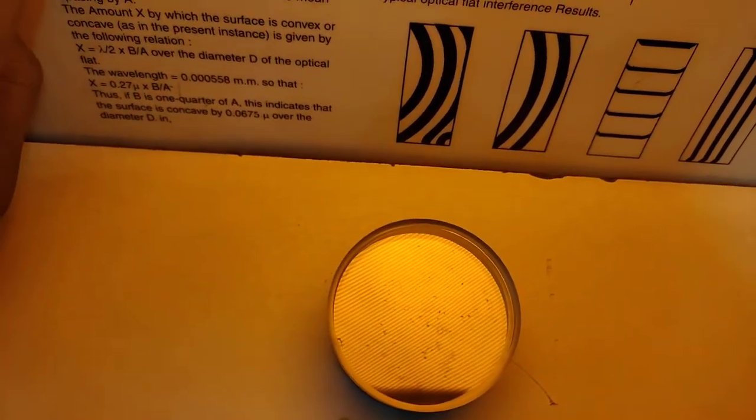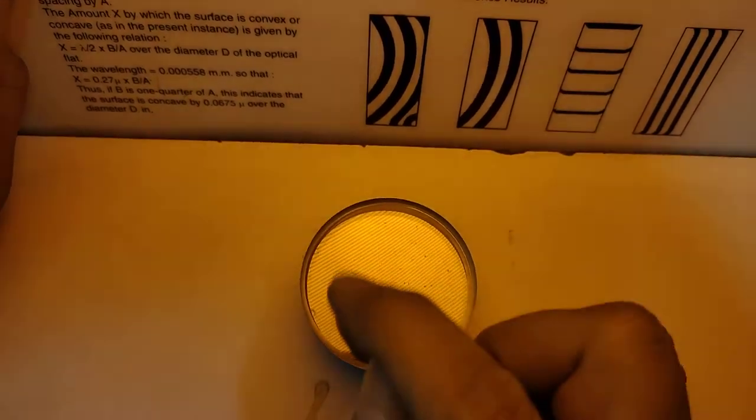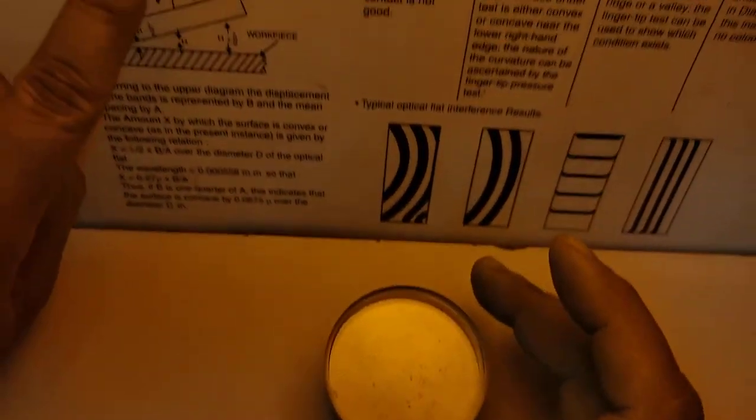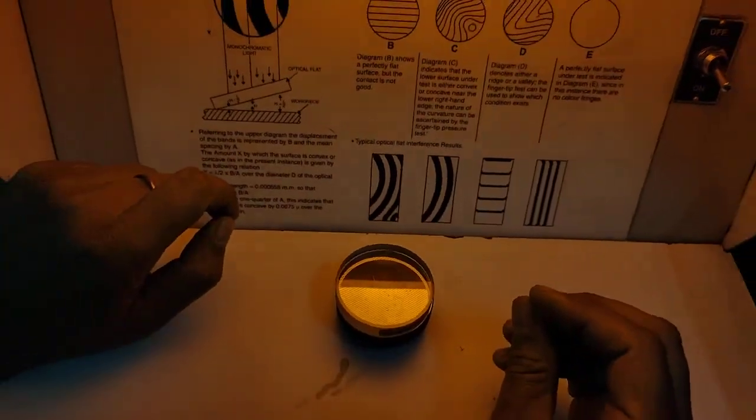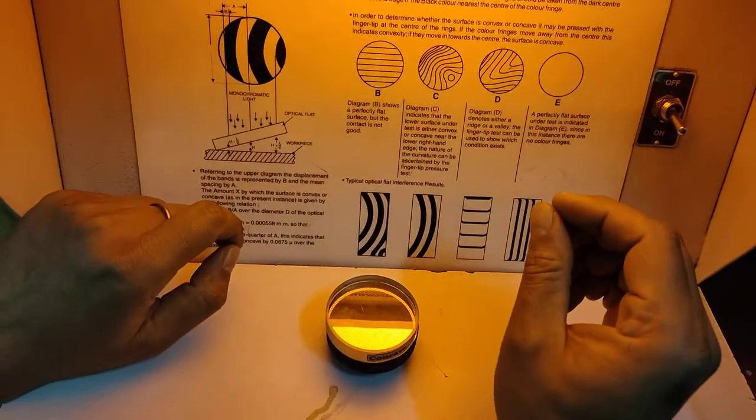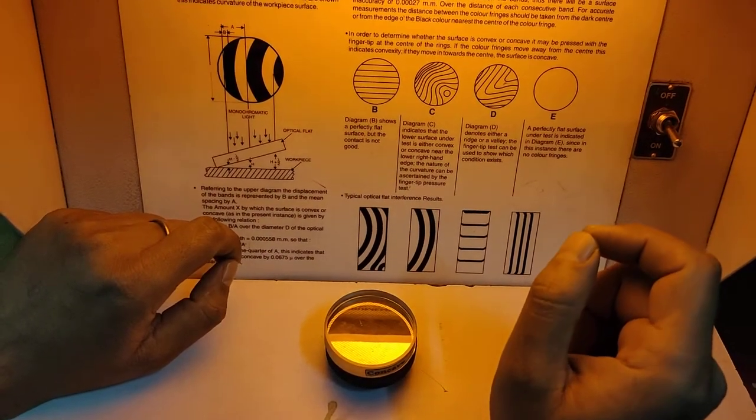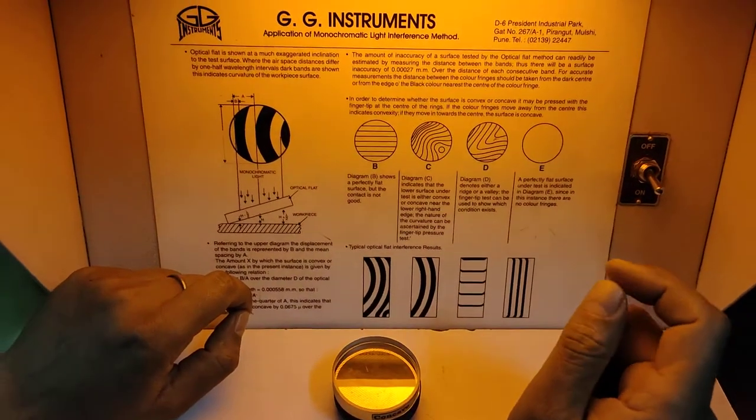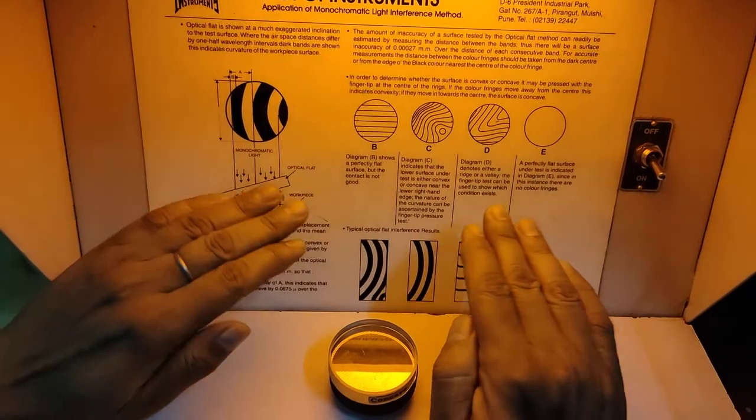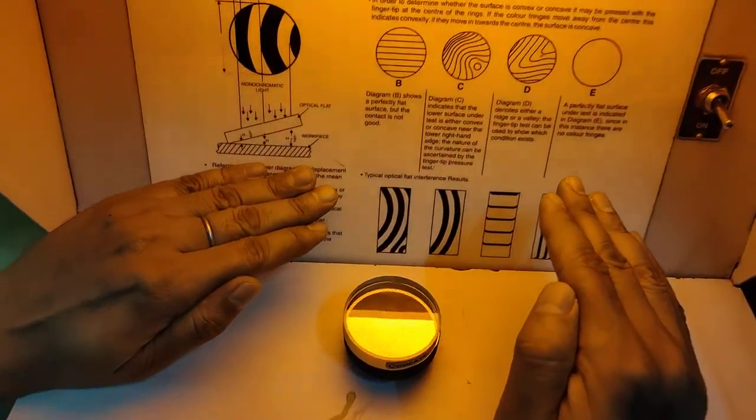When there is a reflection like this, we are going to see the dark bands which are coming on the surface. From the bands we can identify the surface whether it is perfectly flat or it is concave, or it is perfectly flat having no surface irregularities.